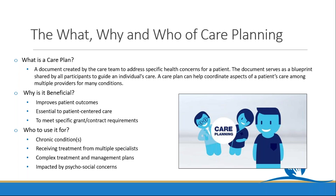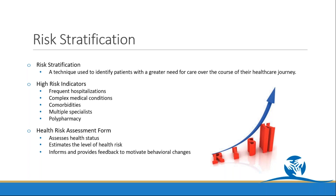Let's take a look at a technique that will help you identify patients that would benefit most from care management. Risk stratification is a term you've probably heard used more than a few times. It's a technique used to identify patients with a greater need for care. Examples of what could cause a patient to fall into a high-risk category include frequent admissions, complex medical conditions like cancer requiring frequent specialist visits, comorbidities, or those taking a large number of medications. The health risk assessment form is one tool that works by allowing the care team to understand the patient's complete health status, engages the patient in the conversation, and fosters the bond between the patient and the care team.